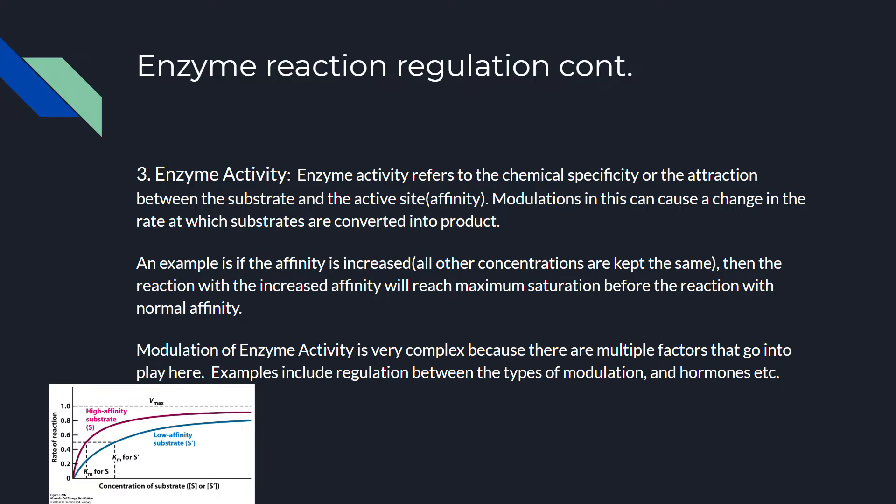The third regulatory factor is enzyme activity. Enzyme activity refers to the chemical specificity or the affinity between the substrate and the active site. Modulations in this can cause a change in the rate at which substrates are converted into a product. For example, if affinity is increased while all concentrations are held the same, the substrate with higher affinity will reach saturation much sooner than one with low affinity, resulting in a faster reaction rate. Modulation of enzyme activity is very complex and involves factors like regulation between types of modulation and different hormones.